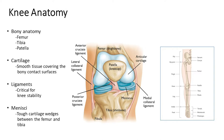Cartilage is tough tissue but has a poor ability to regenerate and heal, and that causes some of the issues we face with chronic knee pain. Ligaments are critical for knee stability — they prevent abnormal or pathologic motion. The menisci are tough cartilage wedges between the femur and the tibia that provide shock absorption and other qualities critical for knee function.